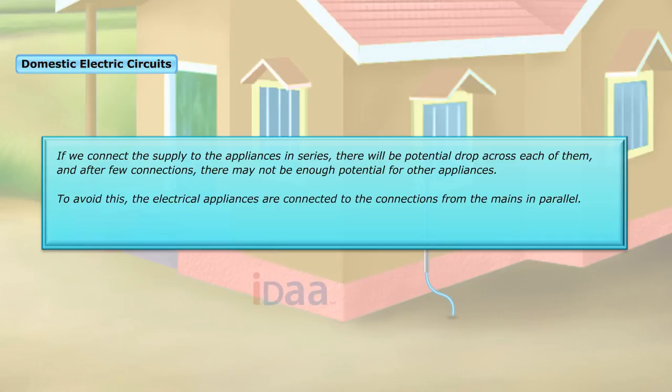To avoid this, the electrical appliances are connected to the connections from the mains in parallel. This ensures that all of them receive the same voltage of current.